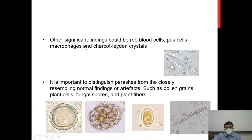Other significant findings that may suggest a parasitic infection include non-parasitic structures such as red blood cells, pus cells, macrophages, and Charcot-Leyden crystals. Charcot-Leyden crystals are refractile structures that are derivatives of eosinophils. Many times there is an eosinophilic reaction to intestinal parasites, and these crystals may be seen in such specimens. While not specific, their presence should prompt more careful examination for parasites.